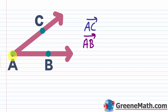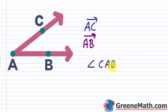When naming the angle, we can call it angle CAB or angle BAC — you can go in either order. Or we could just use the letter of the vertex. We can write out the word 'angle' each time, or use the special angle symbol. So this is angle CAB, or angle BAC. Notice how A, the vertex, is in the middle each time. We can also just say this is angle A.